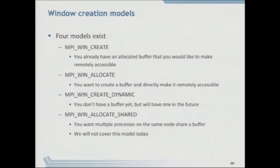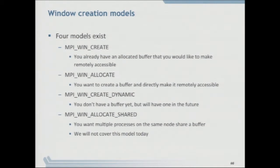How do you create a window? The basic one from MPI 2 is MPI_Win_Create, where you have to allocate a buffer beforehand and then call MPI_Win_Create to make it visible. Win_Allocate is a new function from MPI 3: you don't have to allocate the buffer yourself — MPI will allocate the buffer and give it to you, and it will also become part of a window. When you call MPI_Win_Free, it will free the buffer in this case as well. With Win_Create, it will not free the buffer because you had allocated it, so you are responsible for freeing it.